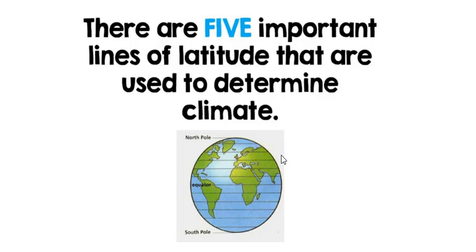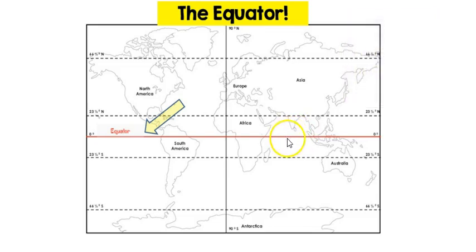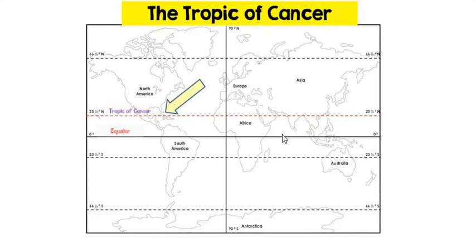You have the equator, which is the hottest latitude line on Earth. If you imagine the Earth as a sphere — like a big rotund person with the belly button sticking out around the middle — that part is closest to the Sun always, and so it is very, very hot near the equator.